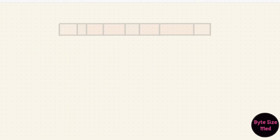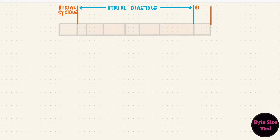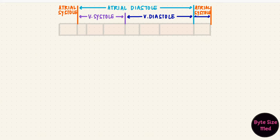We can start anywhere in the cycle, but if we start with atrial systole, that's followed by atrial diastole. Atrial diastole is longer, and since the cycle will repeat, it's followed by atrial systole — the atrial systole of the next cycle. Ventricular systole happens after atrial systole and it's longer. The rest of the duration is ventricular diastole, so the phases will overlap between the chambers. Atrial systole overlaps with late ventricular diastole, so we have atrial systole followed by ventricular systole, ventricular diastole, and atrial systole again.